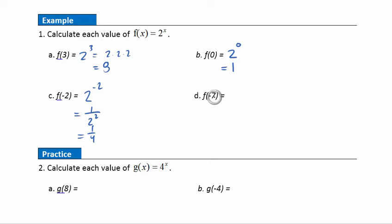For f(-7): 2^(-7). Taking the reciprocal gives 1 over 2^7. On the calculator, hit 2 then the hat or x^y button to the seventh power. That gives 128, so f(-7) = 1/128.